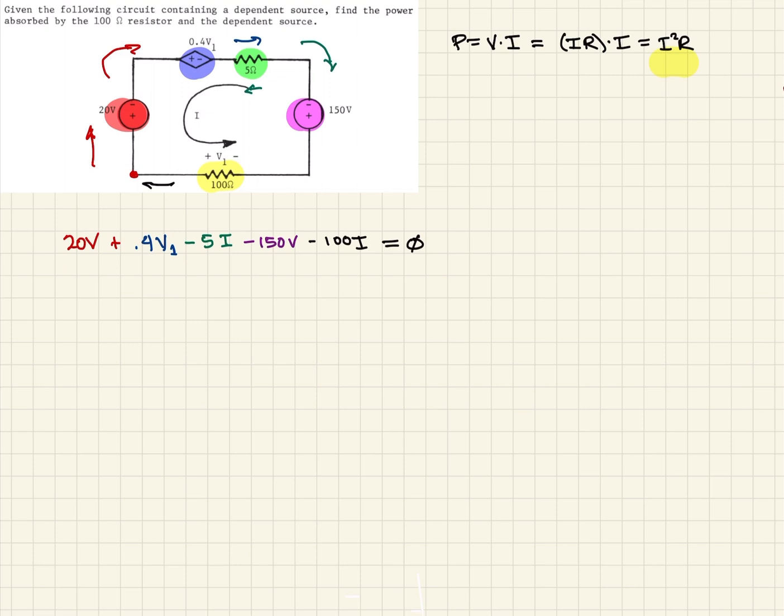Now we have one equation and we have two unknowns. The two unknowns are I and V1. So we need a second equation. Being that we have the dependent source, we can utilize that.